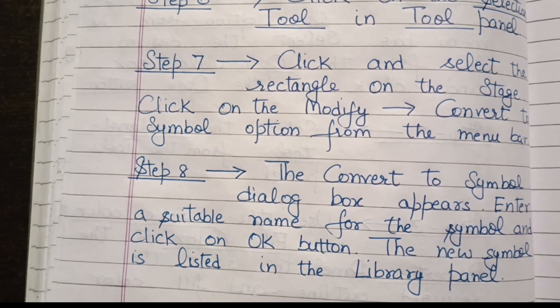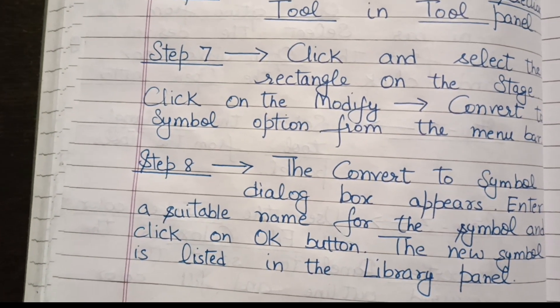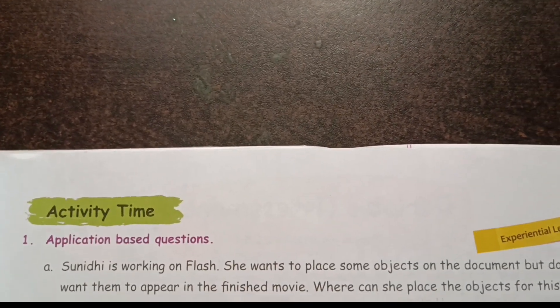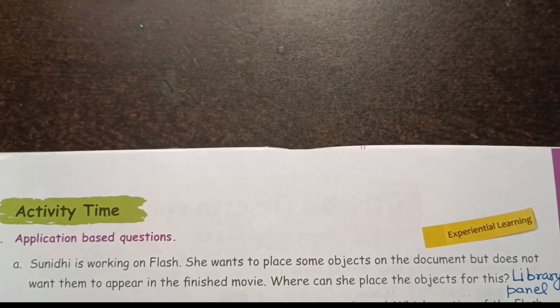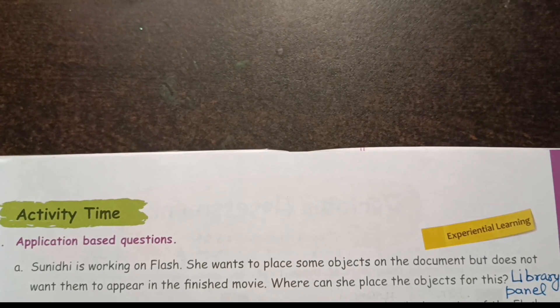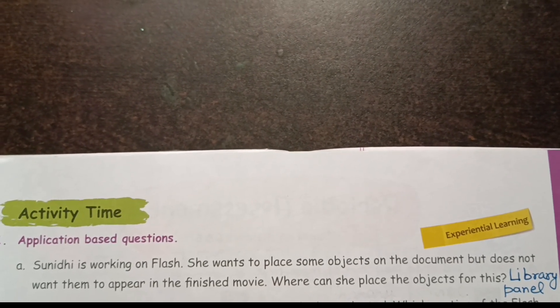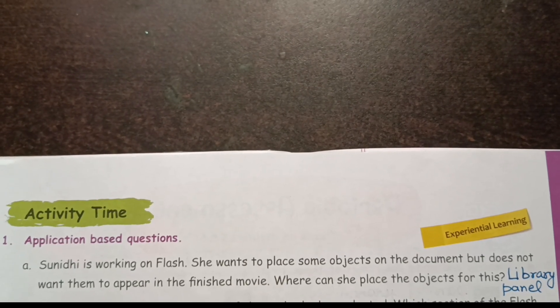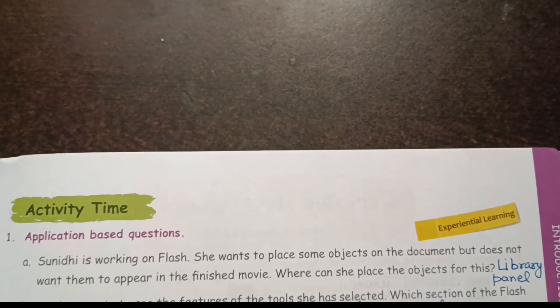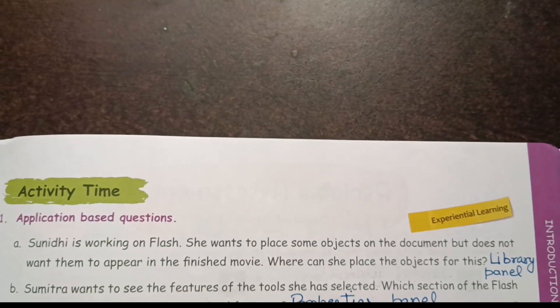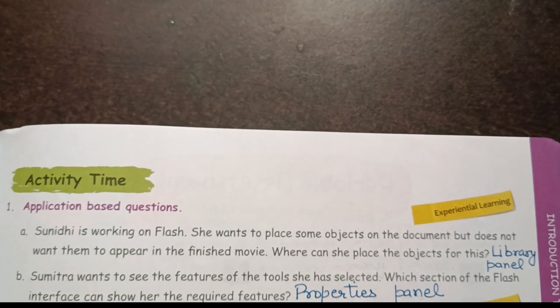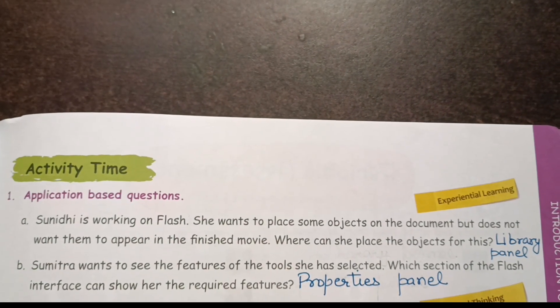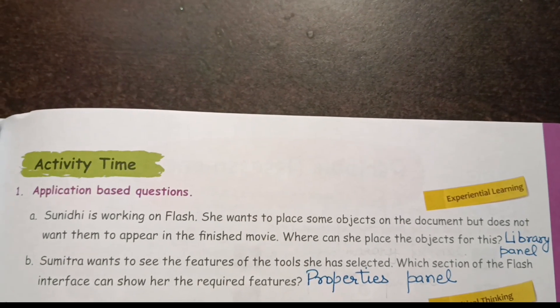Now the application-based questions. First: Suniti is working on Flash and wants to place some objects on the document but does not want them to appear in the finished movie. Where can she place the objects? She can place the objects in the Library panel. Next: Sumitra wants to see the features of the tools she has selected. Which section of the Flash interface can show her the required features? The answer is the Properties panel.